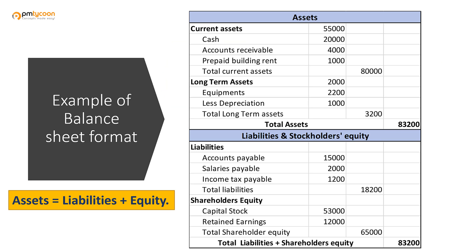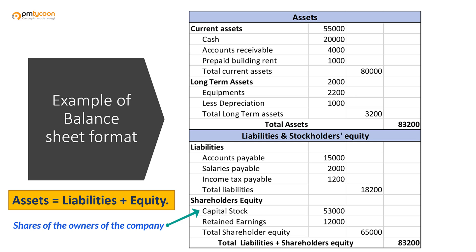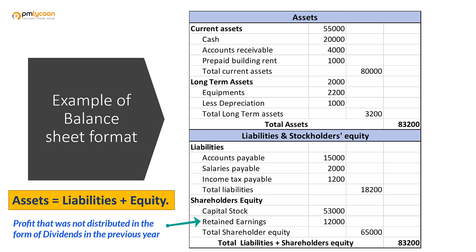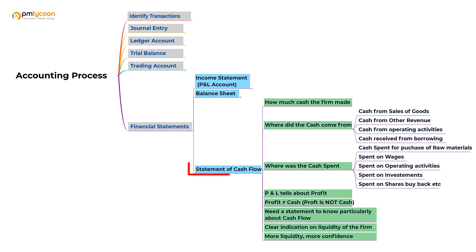I have drawn a sample balance sheet that you can see on the screen. It shows the details of all the assets, all the liabilities, and shareholders' equity. Capital stock is nothing but the shares issued by the company to its owners. Retained earnings, as discussed earlier in elements of accounting, are the dividends that were not distributed to shareholders in previous years. Assets are matched with liabilities and shareholders' equity — that is all about the balance sheet.